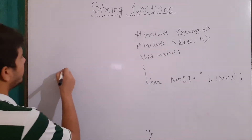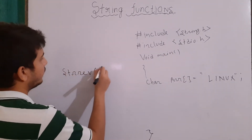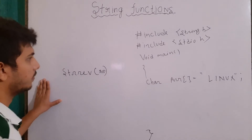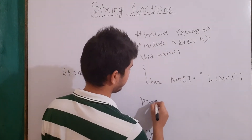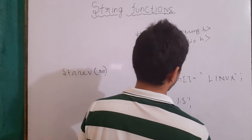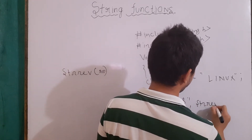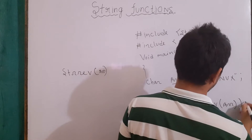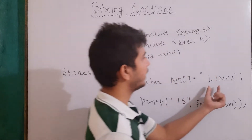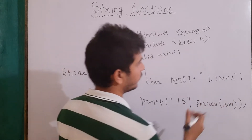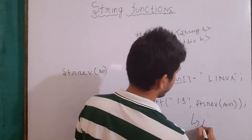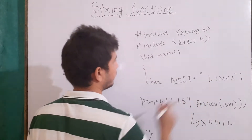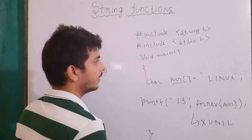Our next function is strrev. It will take some string and it will reverse the string. For example, if we write printf("%s", strrev(arr)), it will take "linux" as input and give me its reverse, which will be "xunil". So our output will be the reverse of the given string.